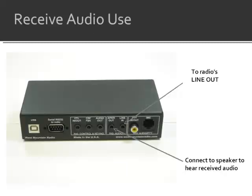Received audio is handled by connecting the radio's line output to the Rig Blaster's line input. An audio cable is provided with the Rig Blaster for this purpose. To listen to the received audio, connect a speaker to the Rig Blaster's speaker output.